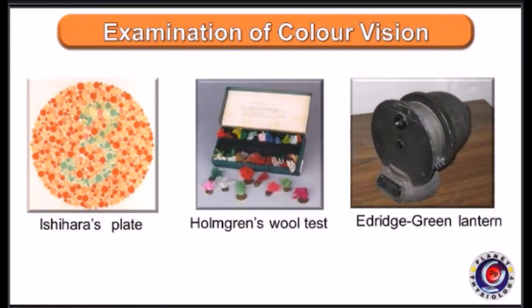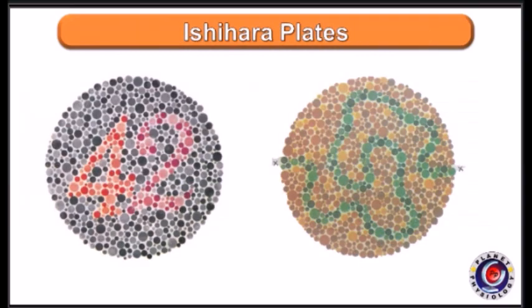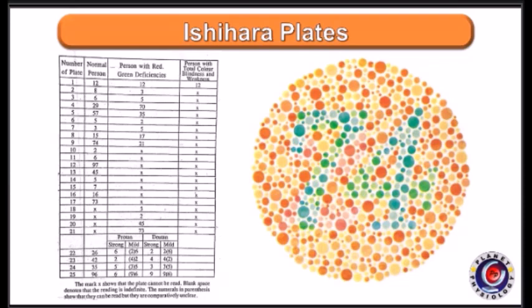Now let us see how to examine color vision. It can be assessed by an Ishihara chart, Holmgren's wool test, or by the Edridge-Green lantern. The Ishihara chart is a series of color plates. Each plate has some number or lines made of color dots on a background of confusing color dots. Based on the subject's response, a diagnosis is made with the help of the manual. For example, in one plate a normal person reads 74, whereas a person with red-green blindness reads it as 21.